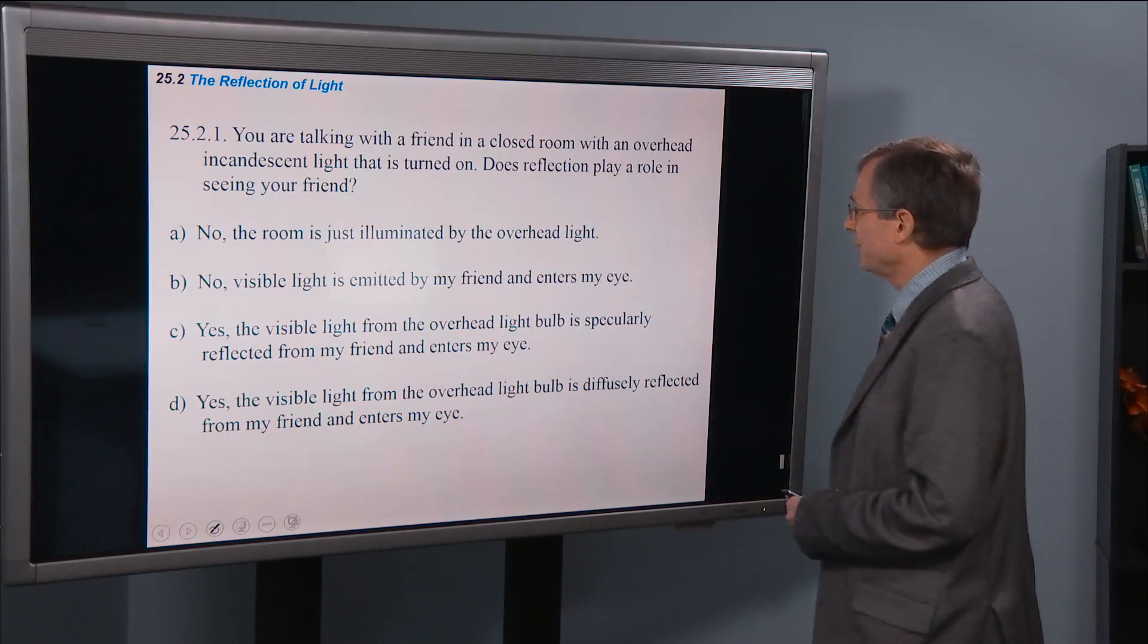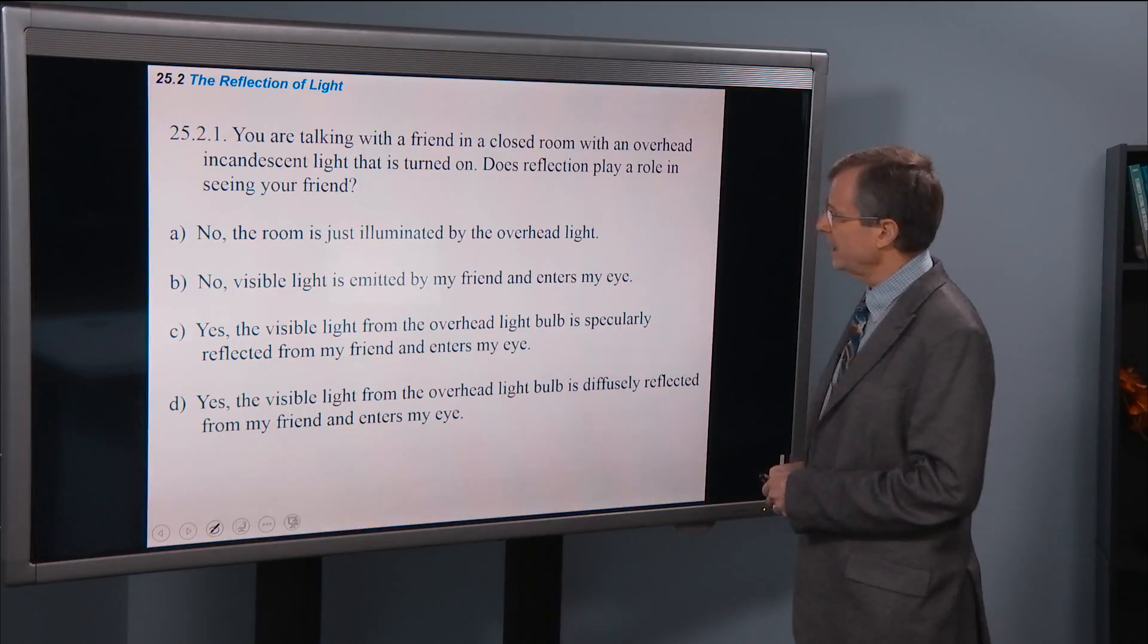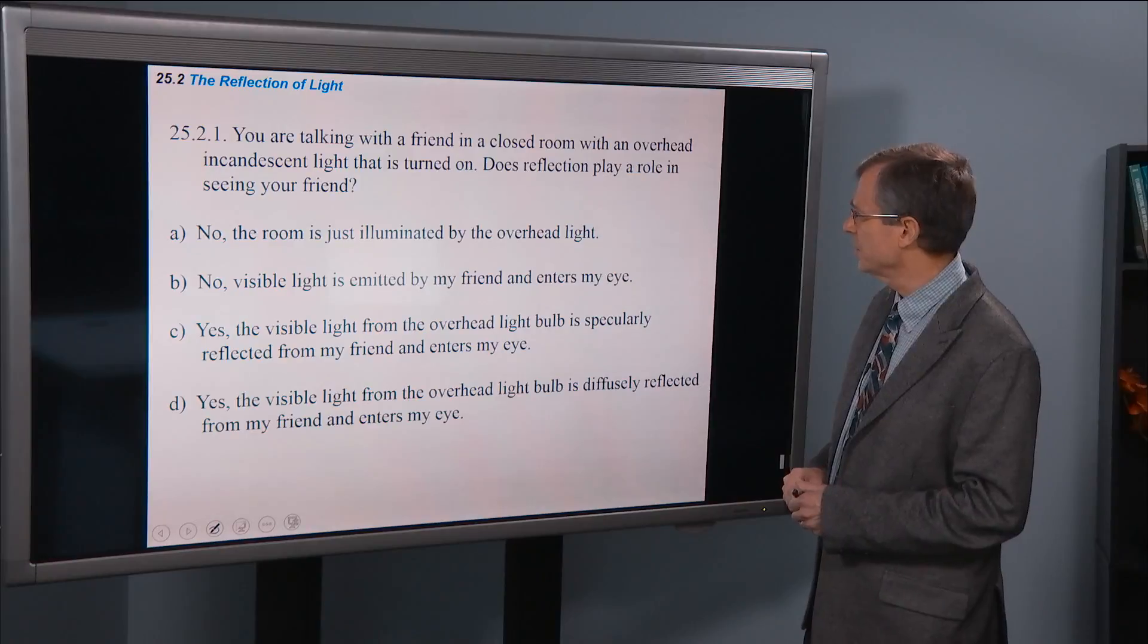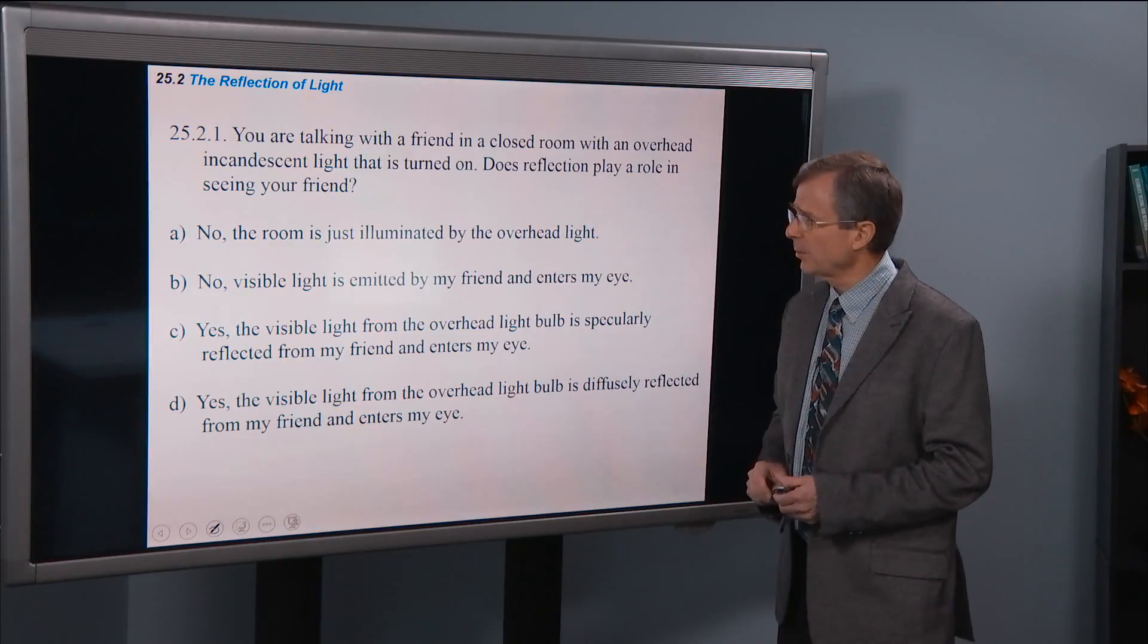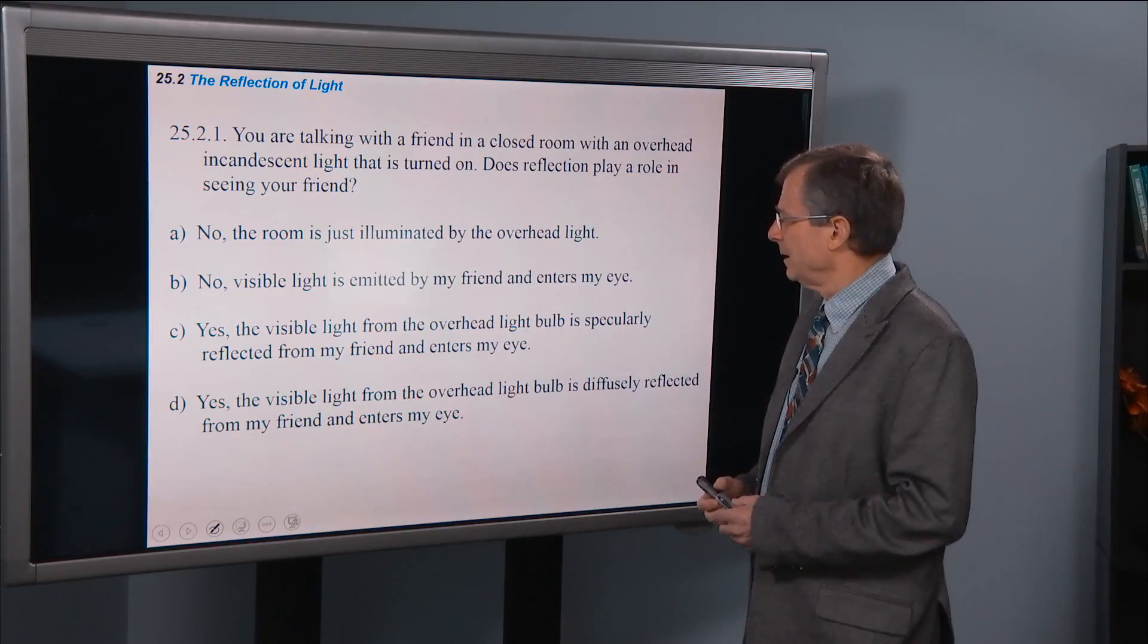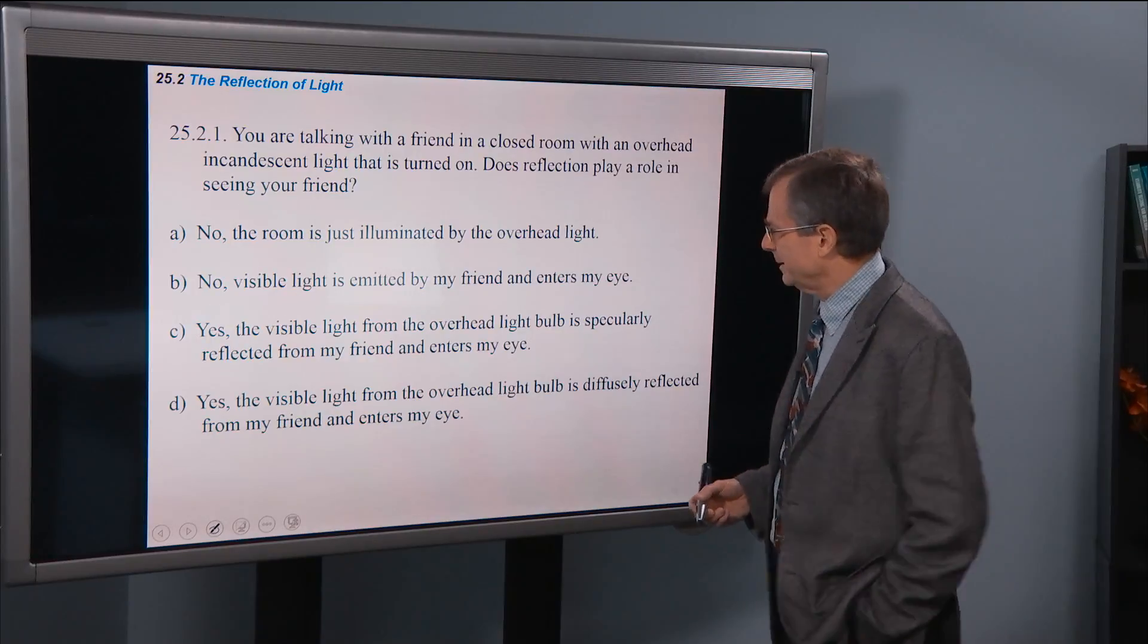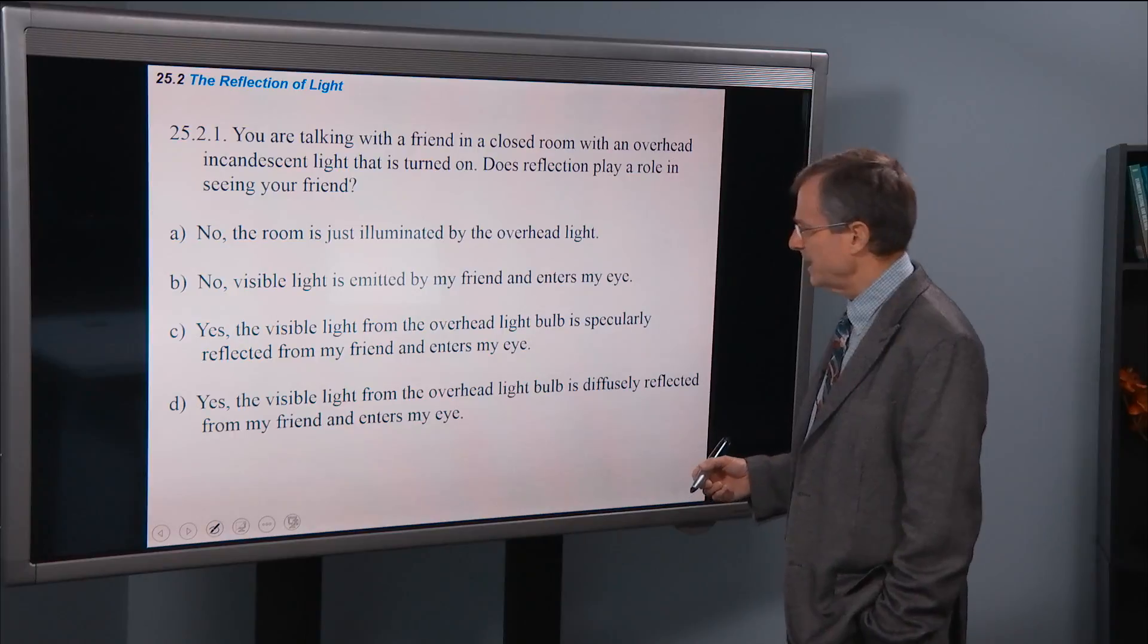So you're talking with a friend in a closed room with an overhead incandescent light that is turned on. Does reflection play a role in seeing your friend? No, the room is just illuminated by the overhead light. No visible light is emitted by my friend and enters my eye.